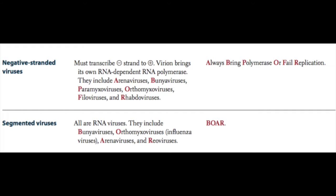The negative-stranded virus mnemonic covers: Arena, Bunya, Paramyxo, Orthomyxo, Filo, and Rhabdo. Among the viruses that have segmented genomes — all of which are RNA viruses — they include the bunyaviruses, the orthomyxoviruses, the arenaviruses, and the reoviruses. Remember BOAR: Bunya, Orthomyxo, Arena, and Reo.